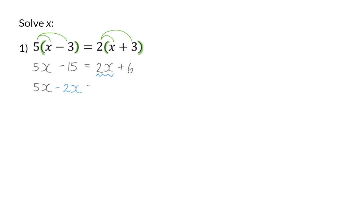On the right hand side, we already have the constant value 6, and the minus 15 on the left will be added on the right hand side. Simplifying both sides, I now have 3x is equal to 21.